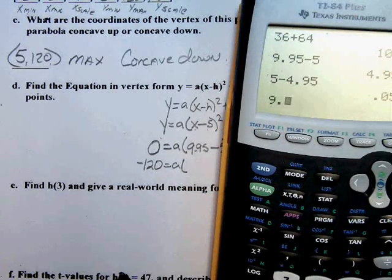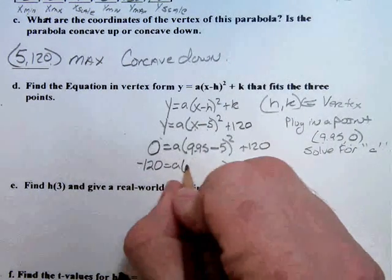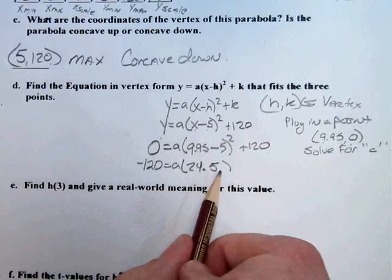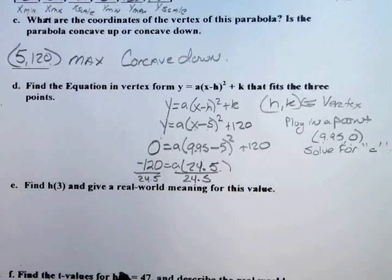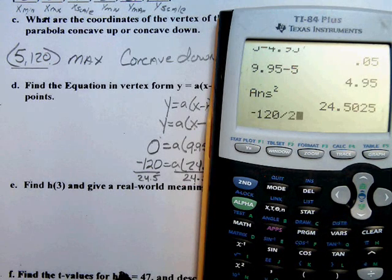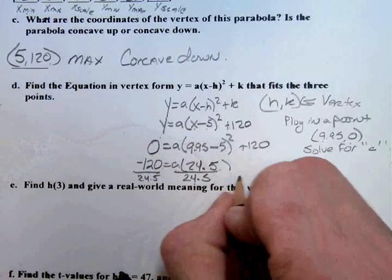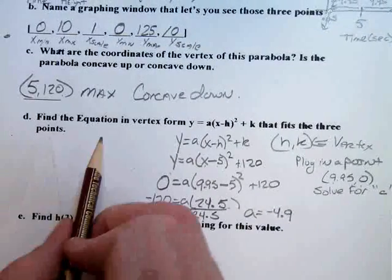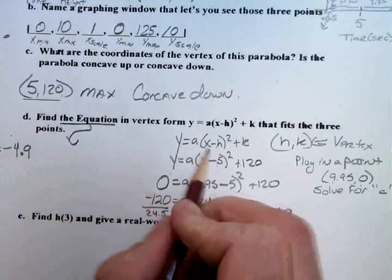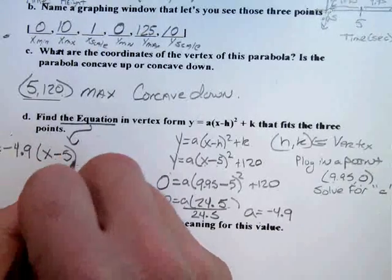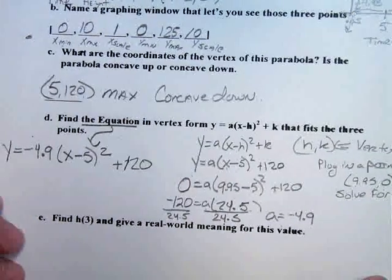And what we've done before is we said 9.95 minus 5 and square it. Let's do that real quick. 9.95 minus 5 enter, which we already know the answer is 4.95 and let's square it. Get 24.5. 24.5 is attached to a by multiplication so we're going to divide that out. And let's just type that in. Negative 120 divided by 24.5 and we have negative 4.89 or negative 4.9. So, I'm going to write that here. a equals negative 4.9. Now, the original question was to find the equation so we do need to rewrite the equation. y equals negative 4.9(x minus 5)² plus 120. Okay, so there's our equation.